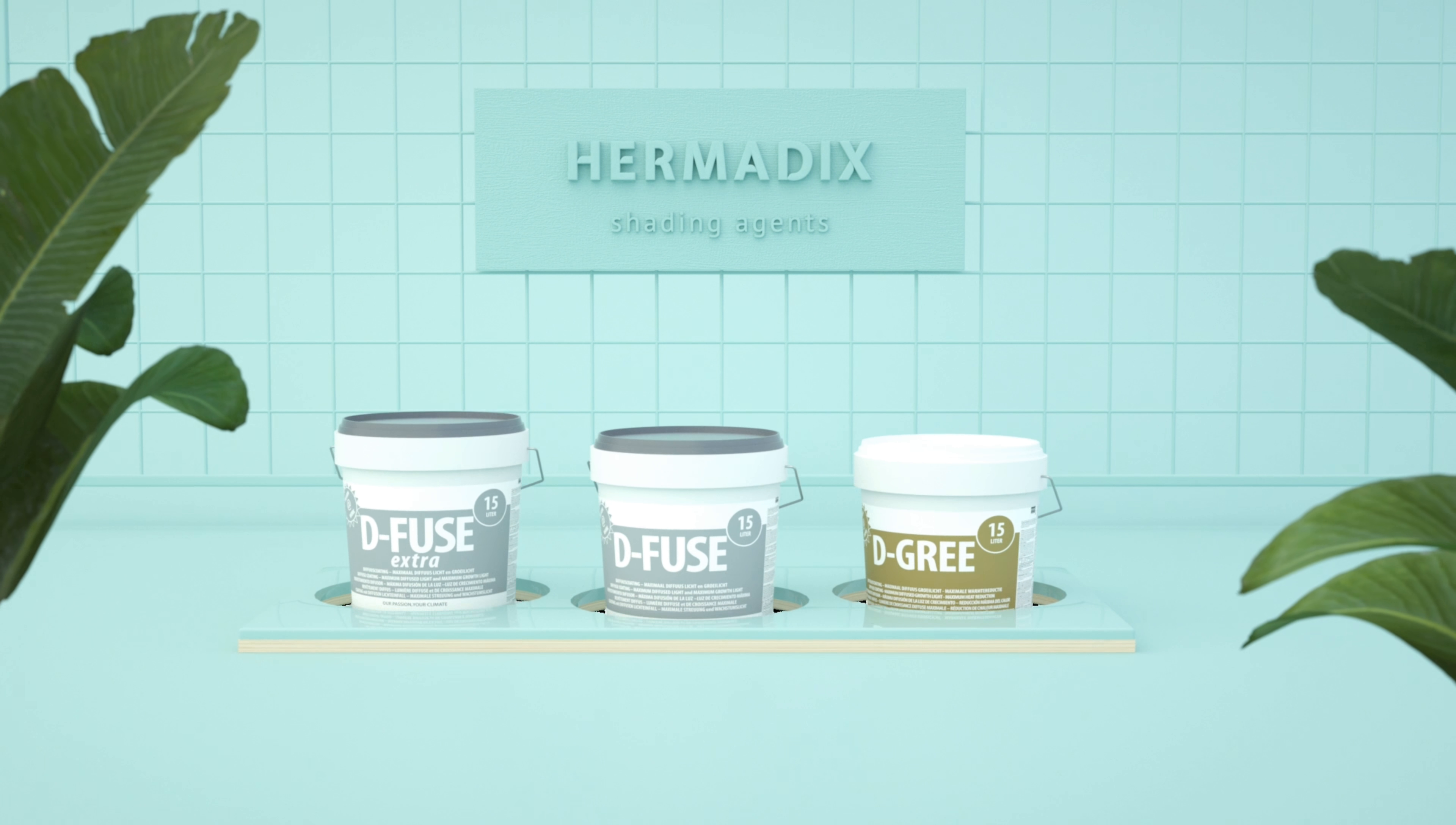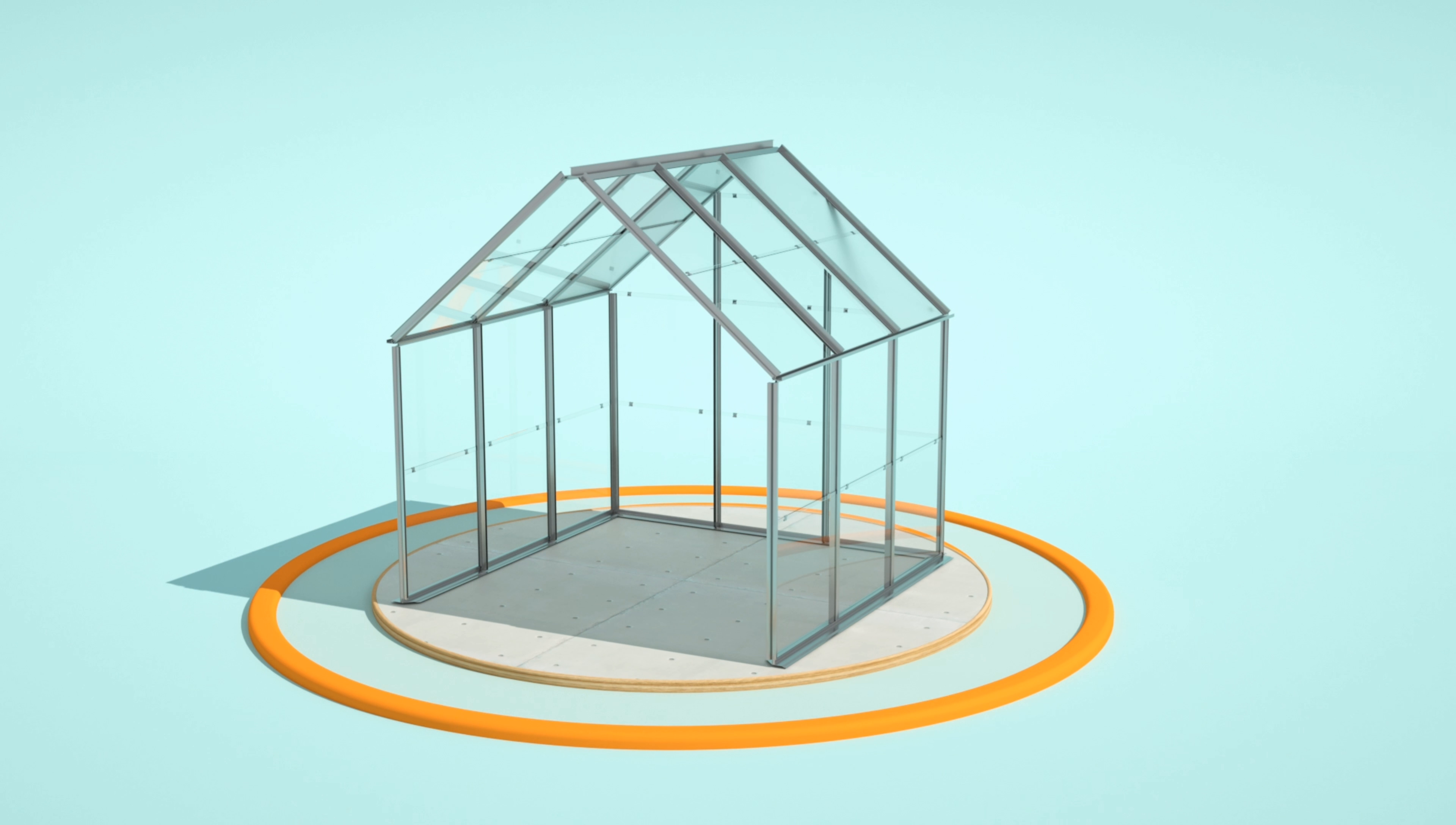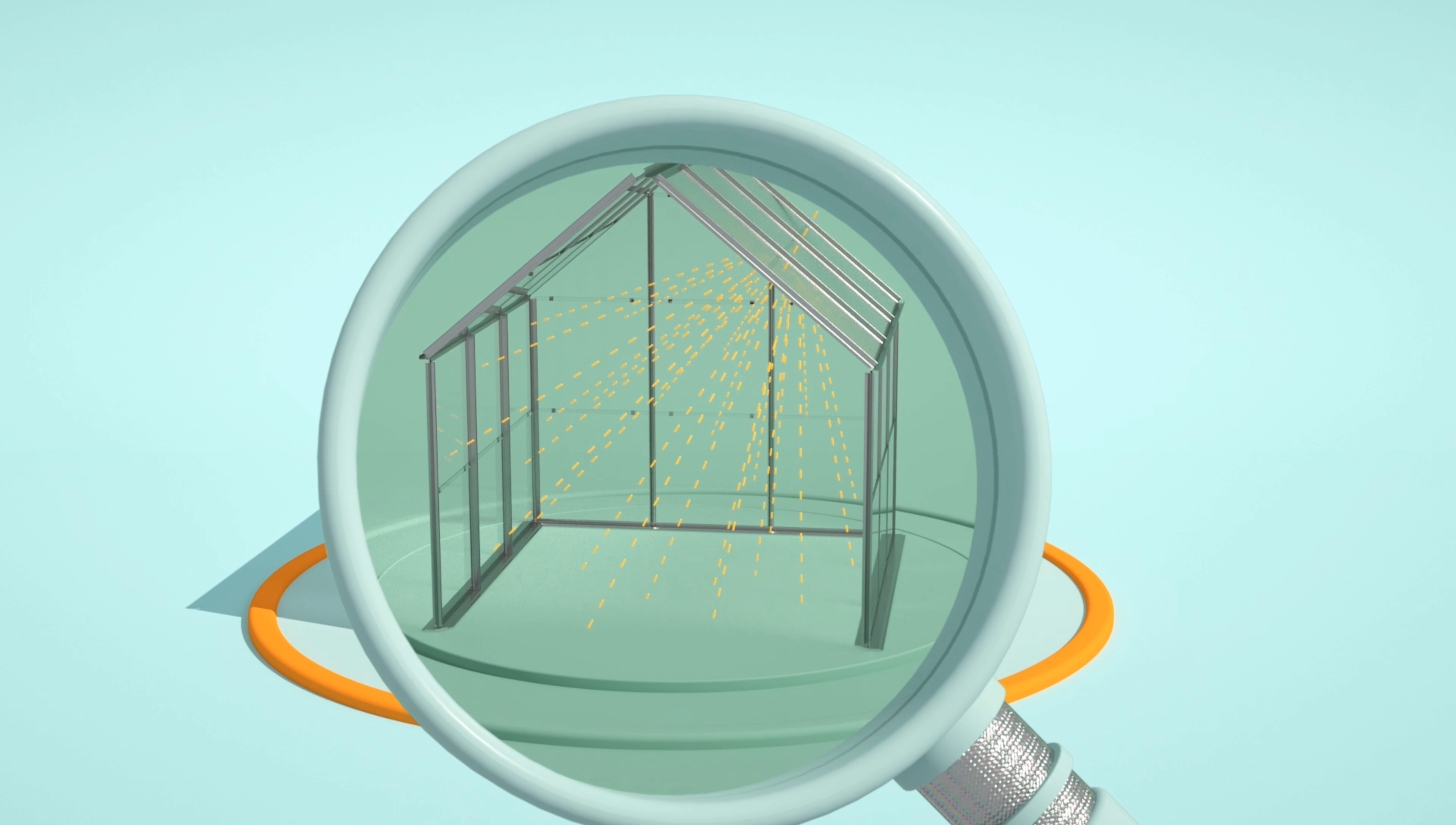There's a better solution: using a Hermedix diffuse coating. By using diffuse, sunlight is scattered both horizontally and vertically, giving much better and even light distribution.